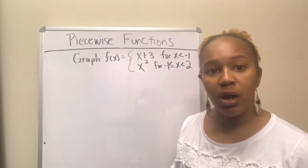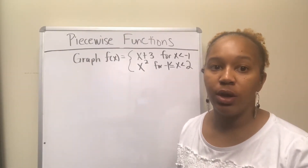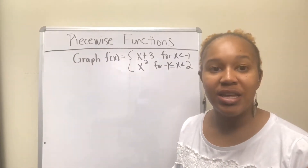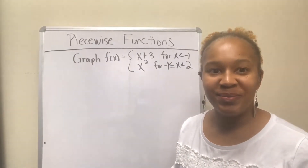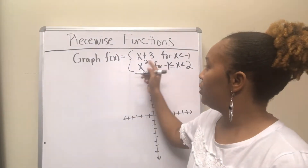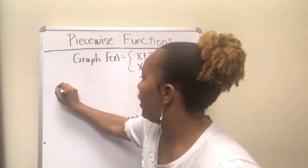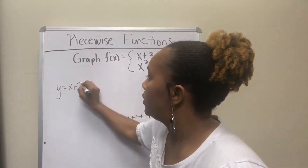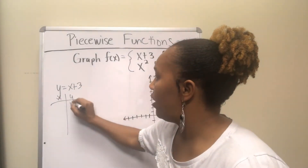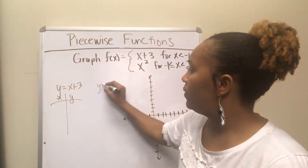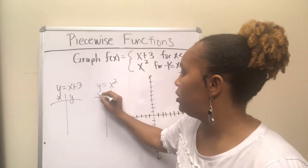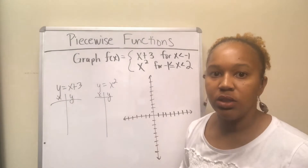I want you to pause the video and see if you can graph this next piecewise function. You have two different functions: the first is y equal to x plus 3, and the second is y equal to x squared. Make a t-chart for each one separately, then combine them on the same graph.